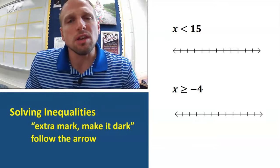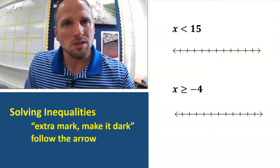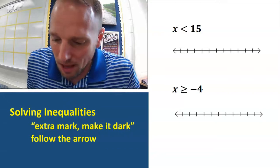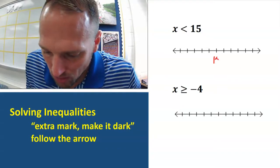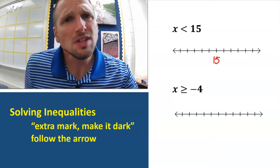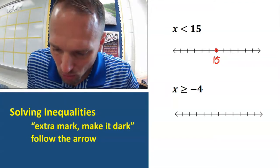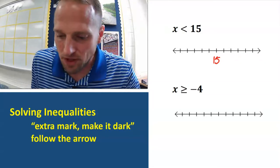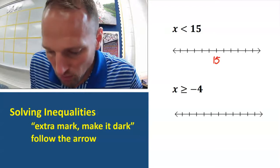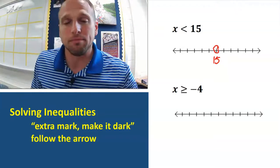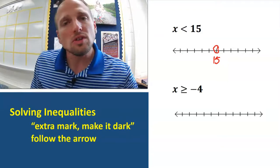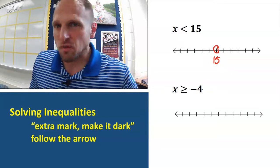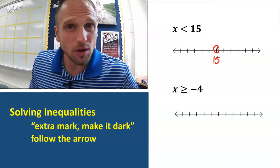Let's get a picture of what it means to have more than one solution. This first one says X is less than 15. I've got a number line and I'm going to put 15 right in the middle. If this had been X equals 15, I'd just put a dot there, but since it says X is less than 15, I'm going to put an open circle there instead. An open circle means that answer is not included — 15 is not going to be included in our answer.